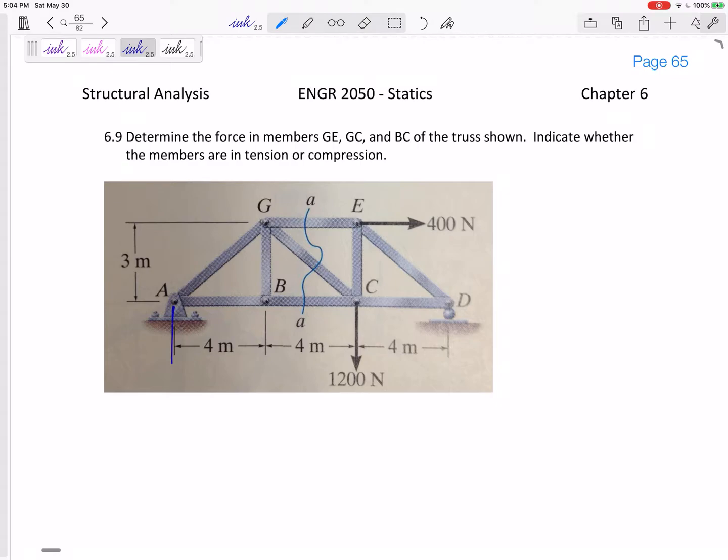Now usually I would look at the whole free body diagram and I would solve for A_Y, A_X, and D_Y, but I'm going to be smart about this. I'm going to look ahead and I'm going to try to think about which half am I going to keep? I like to keep the simpler half.